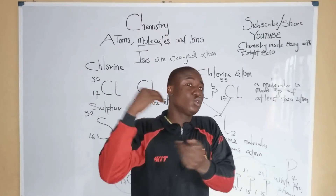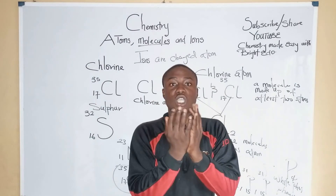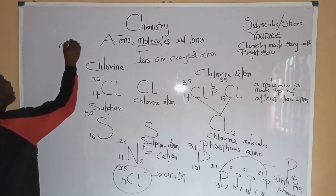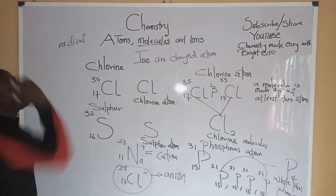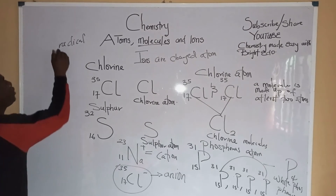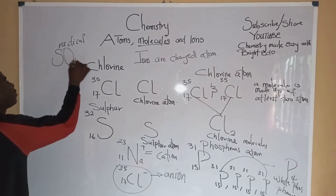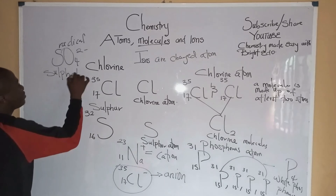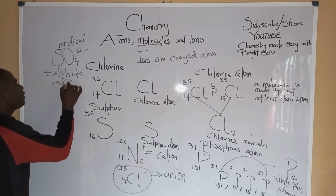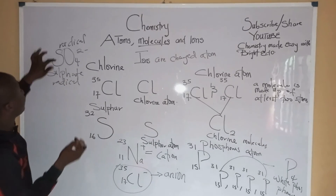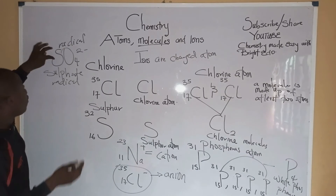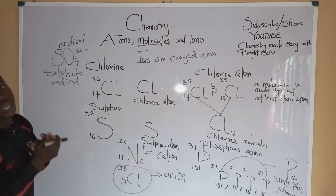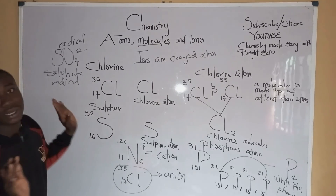A group of atoms which behaves as a single charge unit is called a radical. For example, we have the sulfate radical. Sulfur and oxygen are combined together and they have a single charge unit. These are called radicals, and we have different kinds of radicals.